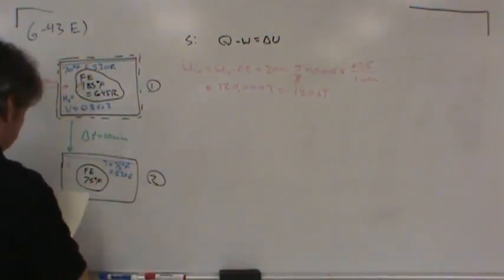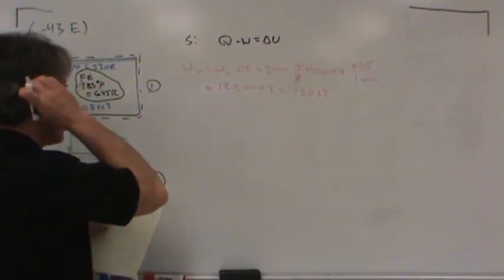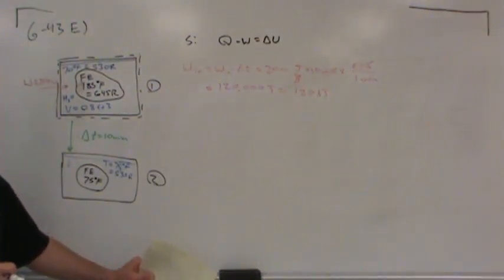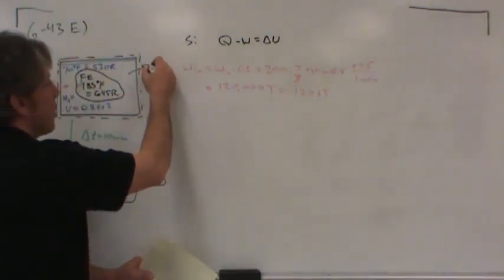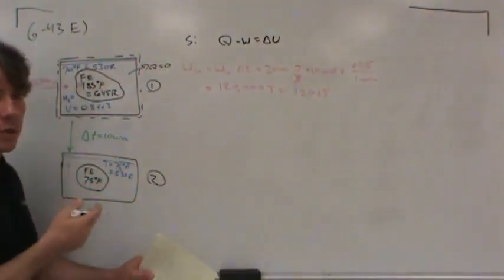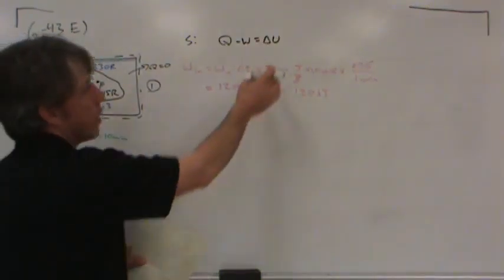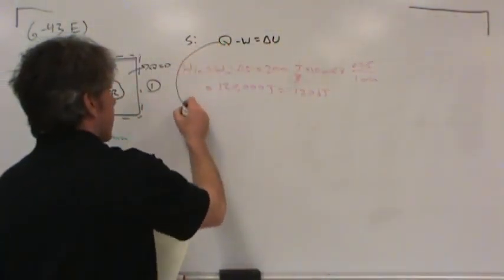How much heat flows into or out of this system? Heat is transferred from the iron to the water internally, but the system boundary is around both the iron and water together — the tank is insulated — so no heat crosses the system boundary. The internal heat transfer is simply a transfer of thermal energy accounted for on the right-hand side of the equation.